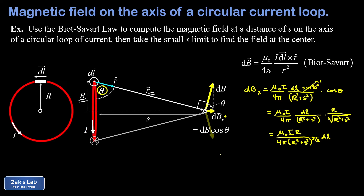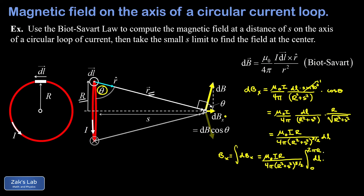The only variable piece of the integral is dl, so we can add up all horizontal contributions to the total magnetic field. Bx equals the integral of all the dbx contributions — just a summation over infinitely many differential pieces. Moving all constants out front gives mu-naught I times big R over 4-pi times (R squared plus s squared) to the three-halves power, times the integral of dl. Adding up all the length increments around the ring from zero to 2-pi-R gives a circumference of 2-pi-R.